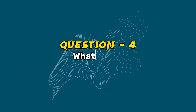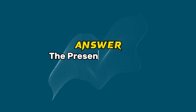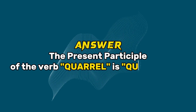Question 4: What is the present participle of the verb quarrel? Answer: The present participle of the verb quarrel is quarreling.